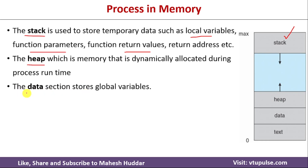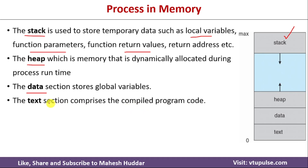The next part is the data section, which stores global variables — whenever we start executing a program, it may generate some global variables, and those are stored in the data section. The very important part of any process is the text section, which comprises the compiled program code. When you write a program in a high-level language and compile it, you get machine-level code, which is stored in the text section.